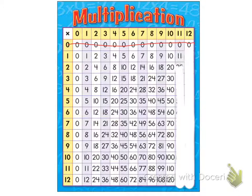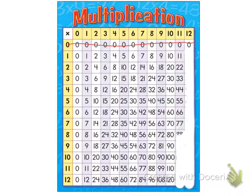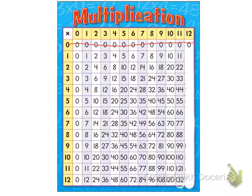Multiples of eleven: eleven, twenty-two, thirty-three, forty-four, fifty-five, sixty-six, seventy-seven, eighty-eight, ninety-nine, one hundred and ten, one hundred twenty-one, one hundred thirty-two.